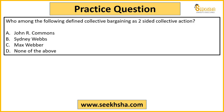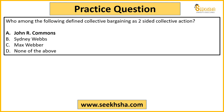Let me show you a sample MCQ question: 'Who among the following defined collective bargaining as two-sided collective action?' Options: A. John R. Commons, B. Sydney Webbs, C. Max Weber, D. None of the above. The correct answer is John R. Commons. If you haven't studied this, you won't be able to answer it. John R. Commons is a very big name in industrial relations — if you're preparing this subject and don't know his work, there is definitely a problem. Once all my videos are uploaded, it will be a 25–35 hour course, and your industrial relations preparation will be thorough.